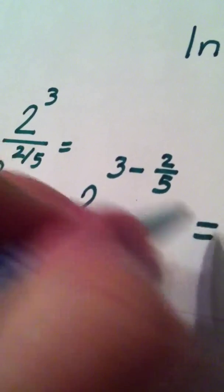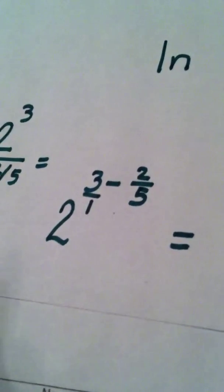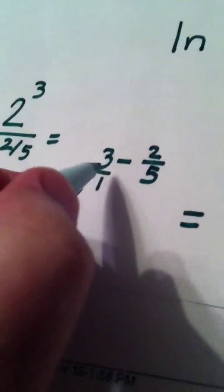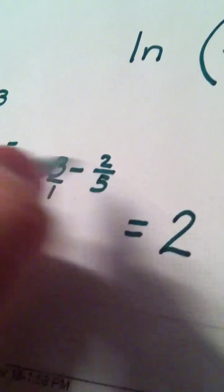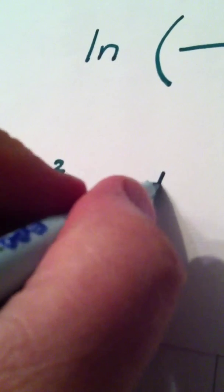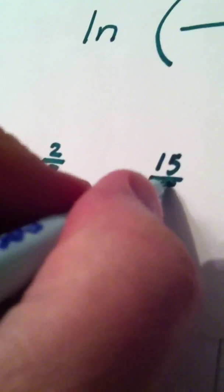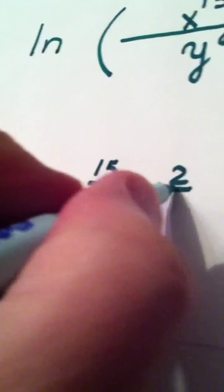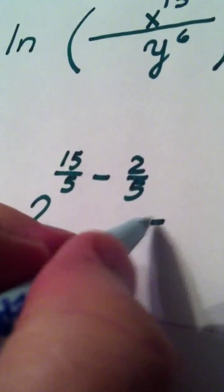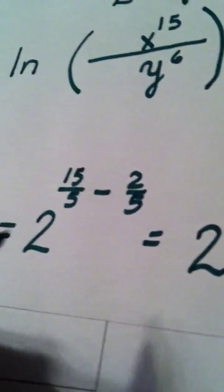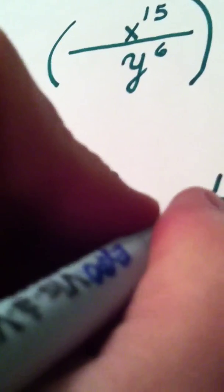So, 2 to the 3rd divided by 2 to the 2 fifths becomes 2 to the 3 minus 2 fifths. This 3 is really 3 over 1. To subtract these I need to get a common denominator of 5. So, I write 3 as 15 over 5. We pick up the minus 2 over 5. And that gives me 2 to the 13 over 5.